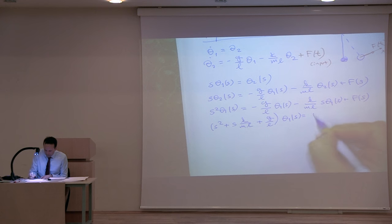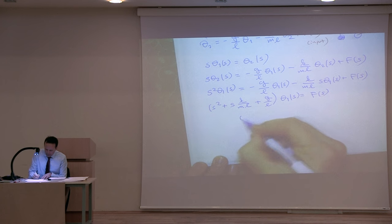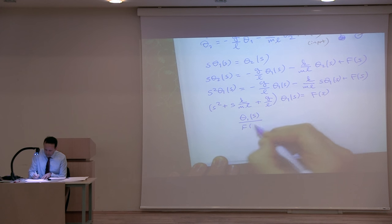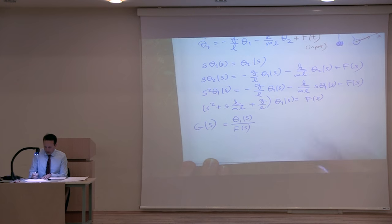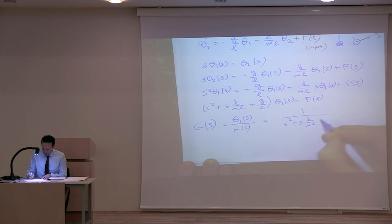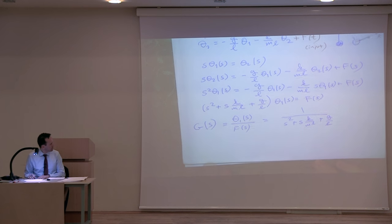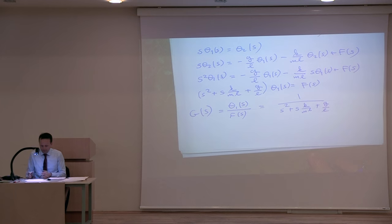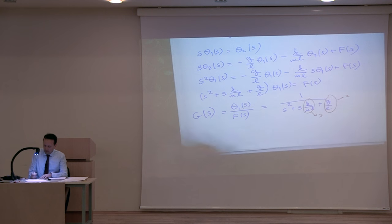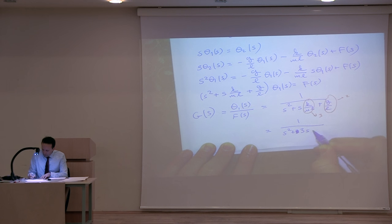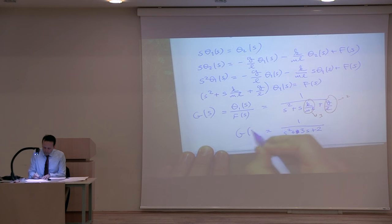Rearranging: [S² + S*(K/ML) + G/L]*Θ₁(s) = F(s). The transfer function — output divided by input — equals 1 / [S² + S*(K/ML) + G/L]. Using numeric values (K=3, G/L=2), this becomes 1 / (S² + 3S + 2).